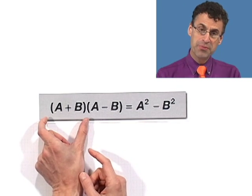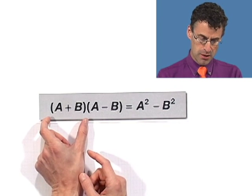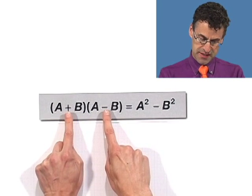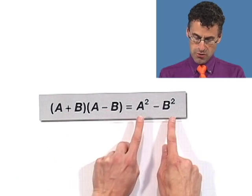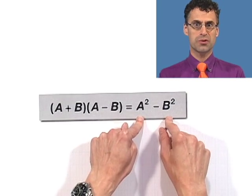So whenever you see a binomial multiplied by almost the exact same thing with the sign changed, you always know how to write that. That's a real cool thing.